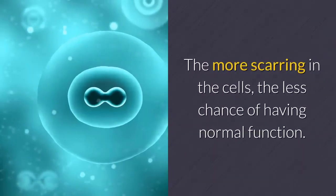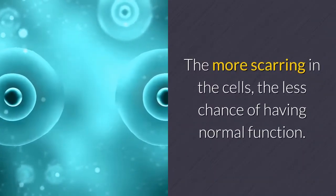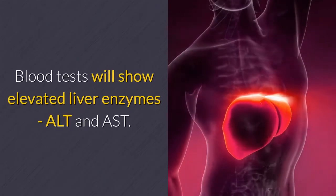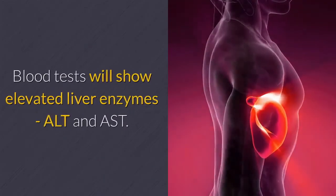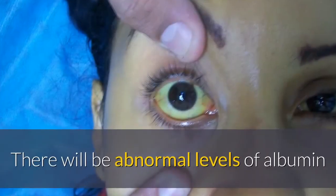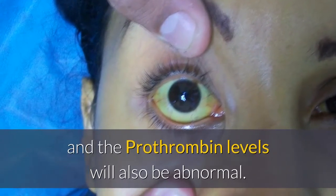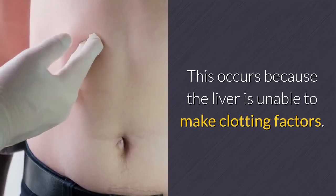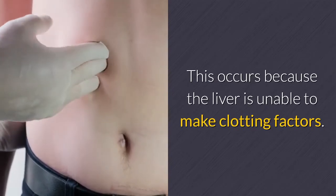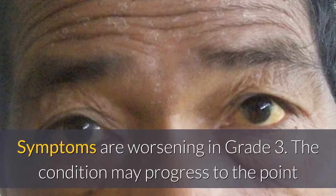The more scarring in the cells, the less chance of having normal function. Blood tests will show elevated liver enzymes — ALT and AST. There will be abnormal levels of albumin, and the prothrombin levels will also be abnormal. This occurs because the liver is unable to make clotting factors.